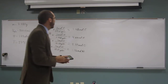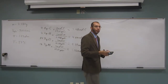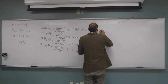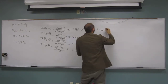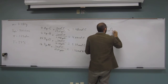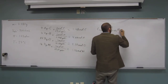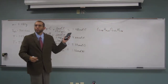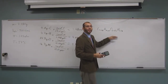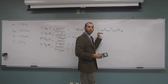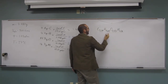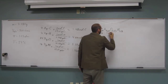So now we can get the empirical formula. We have C: 3.48 moles, H: 4.63 moles, O: 2.33 moles, and N: 1.16 moles. Remember, we divide by the smallest number. The smallest one is 1.16.